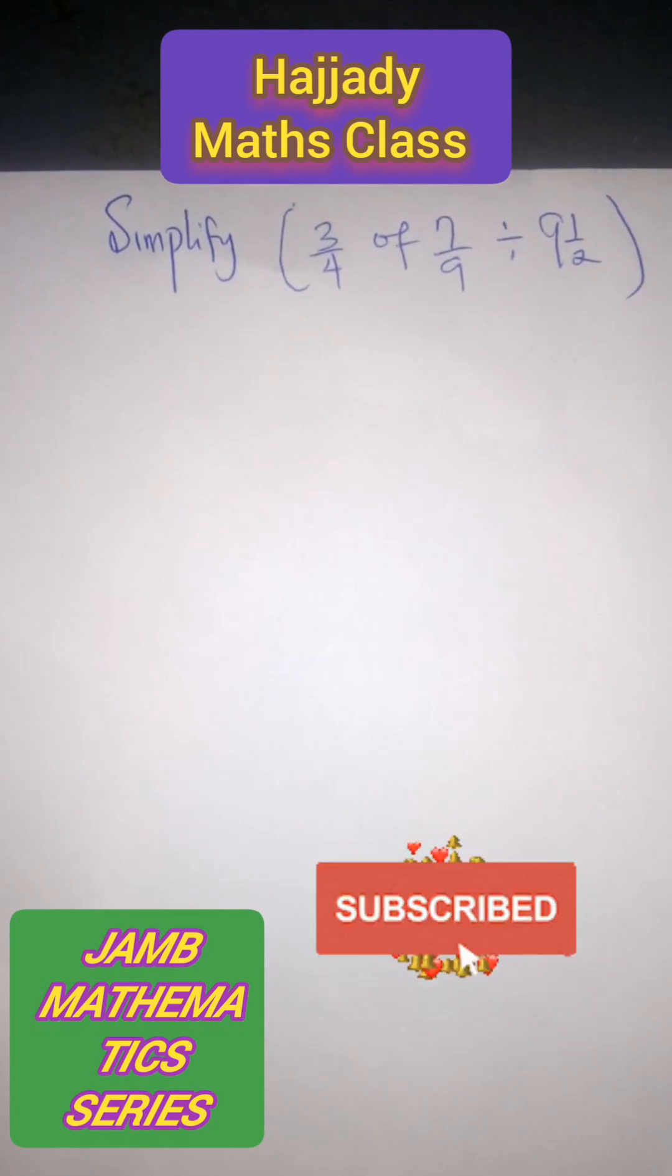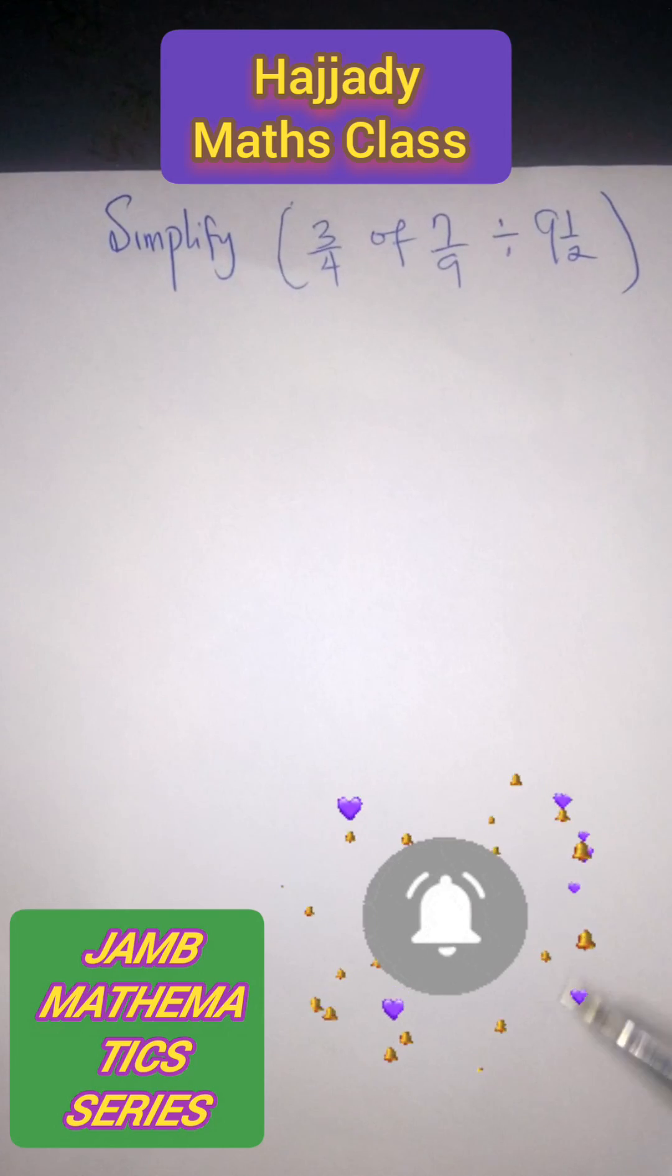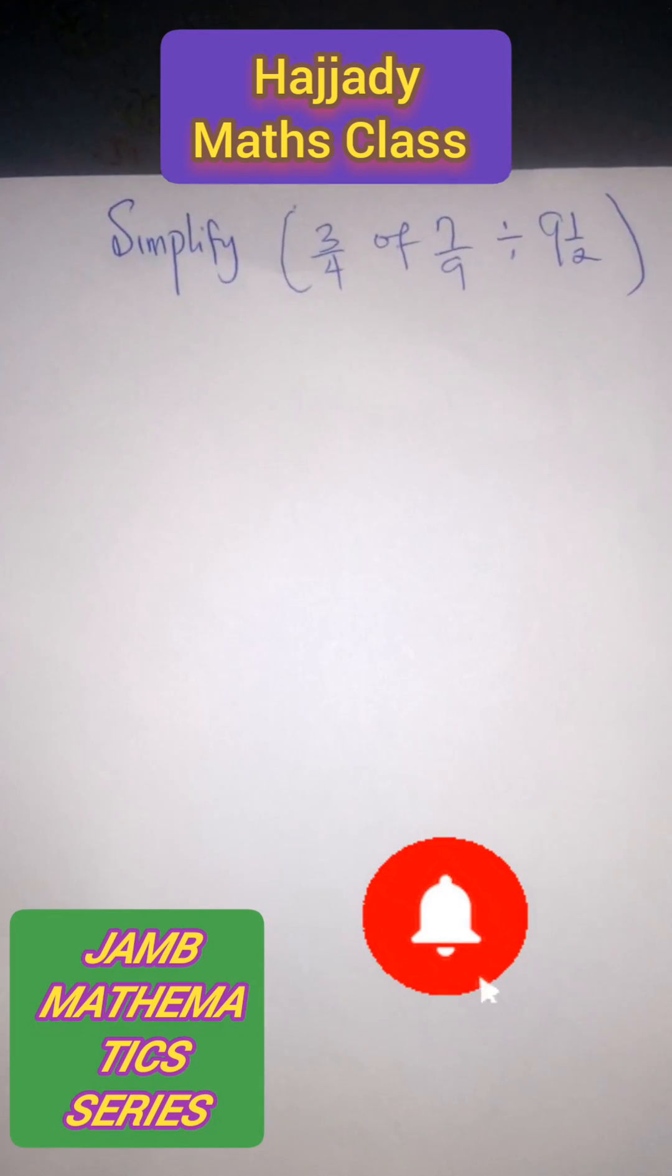Welcome to Hajjady Maths Class. Today we will be solving question number 4. Here we are asked to simplify 3 over 4 of 7 over 9 divided by 9 and 1 over 2.